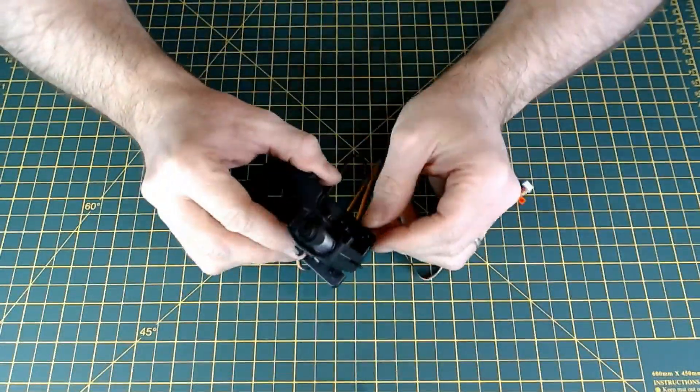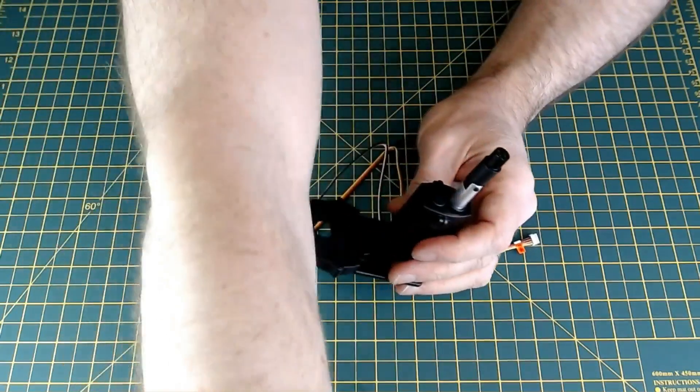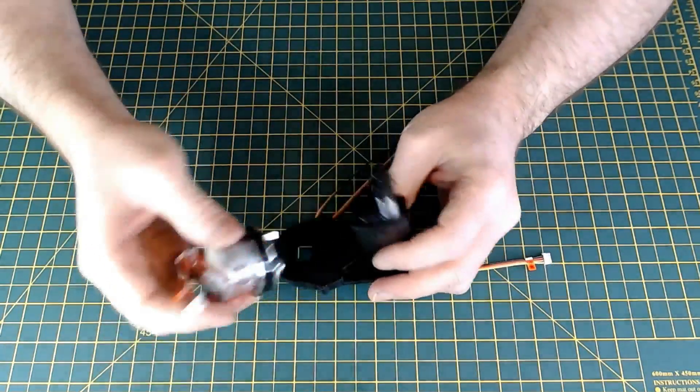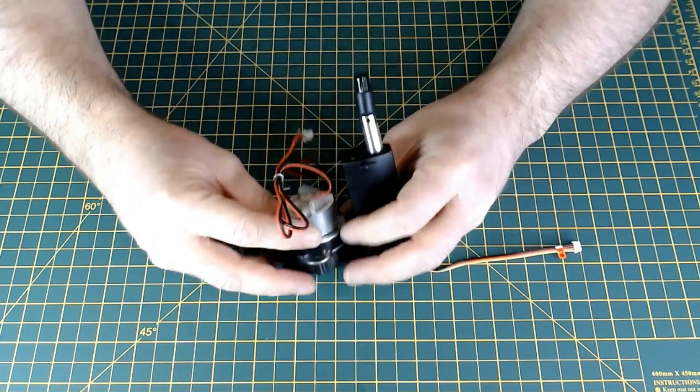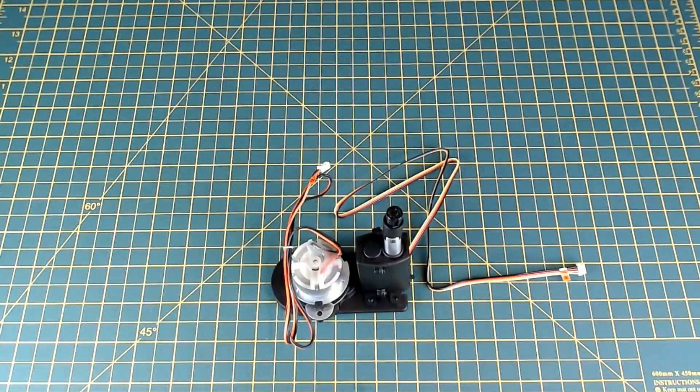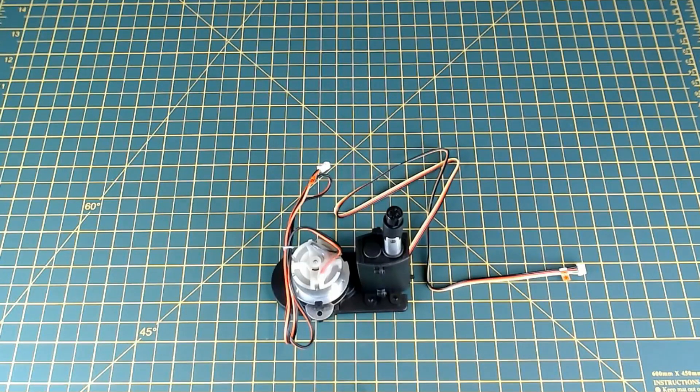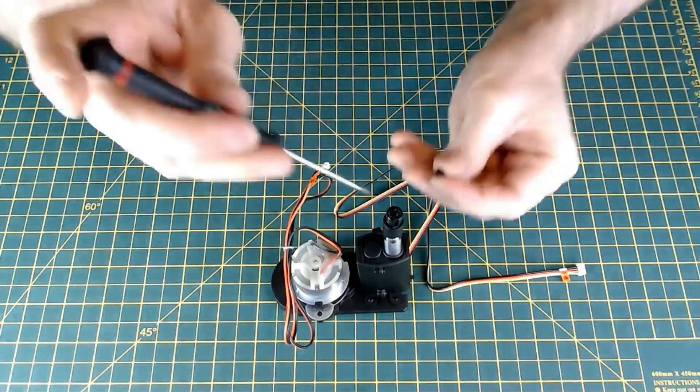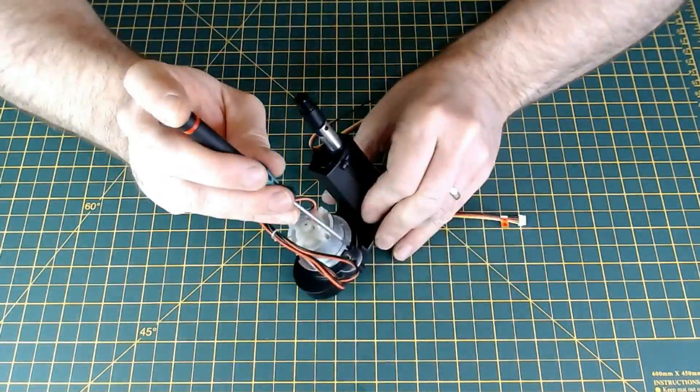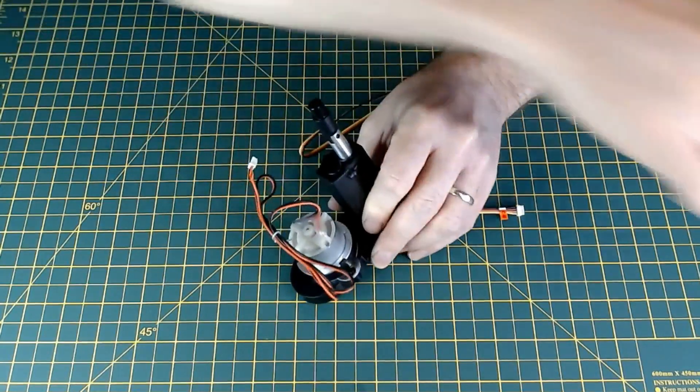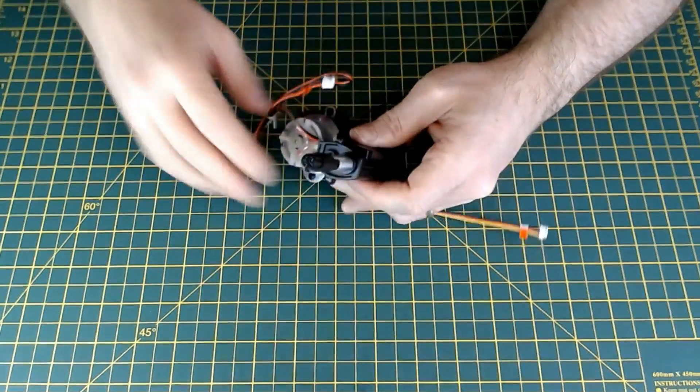That's all nicely screwed down. Then we bring the motor over and fit that with the shaft going through the hole, obviously. That gets fitted in with two by five PV screws—oh no, sorry—PWB two by five screws. That's the motor then fitted.